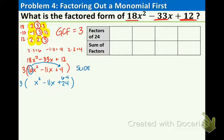Now we're ready to use the x method. Take the 24, put it up top. Take the negative 11, put it on the bottom. Now we have to figure out what numbers do we multiply to get 24 but add to get negative 11. In order to multiply to get a positive but add to get a negative, you must have two negative numbers.